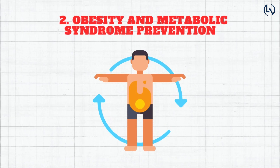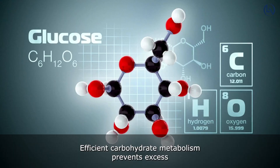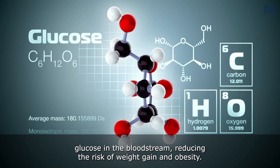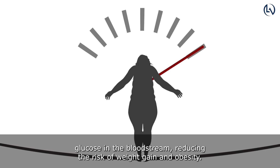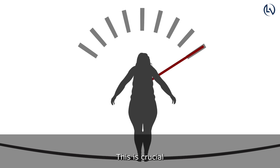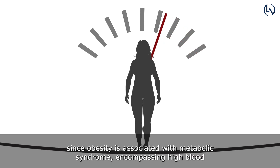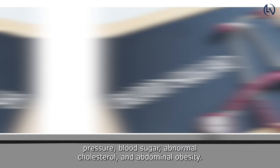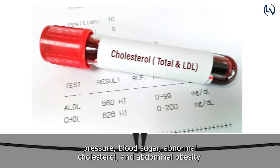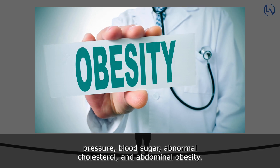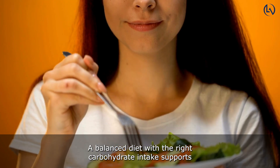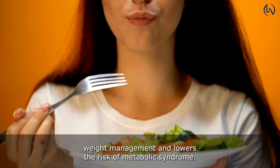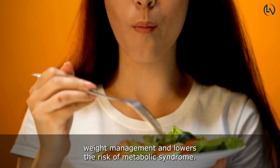Obesity and Metabolic Syndrome Prevention: Efficient carbohydrate metabolism prevents excess glucose in the bloodstream, reducing the risk of weight gain and obesity. This is crucial since obesity is associated with metabolic syndrome, encompassing high blood pressure, blood sugar, abnormal cholesterol, and abdominal obesity. A balanced diet with the right carbohydrate intake supports weight management and lowers the risk of metabolic syndrome.